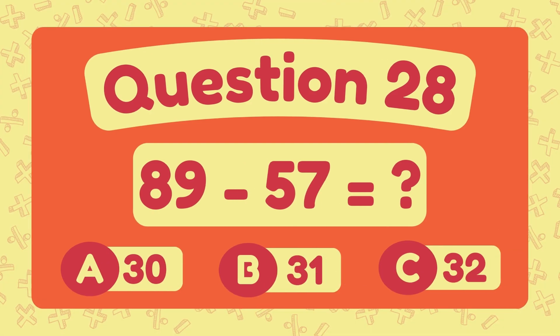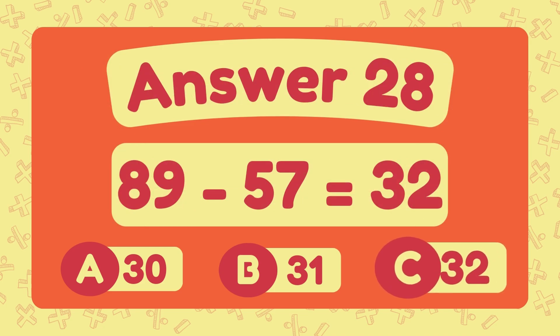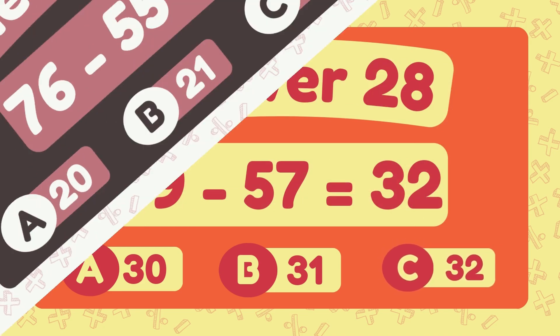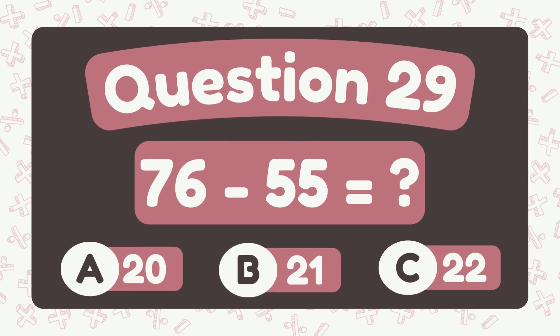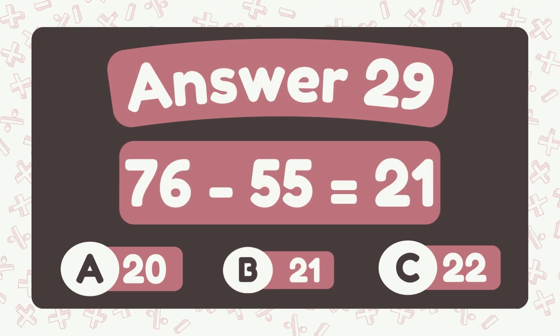What is eighty-nine minus fifty-seven? The answer is thirty-two. What is seventy-six minus fifty-five? The answer is twenty-one.